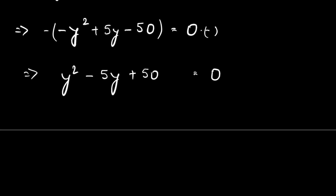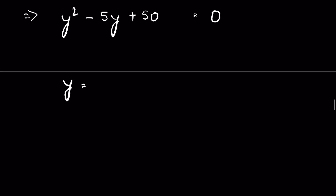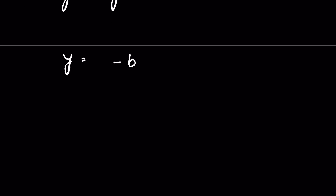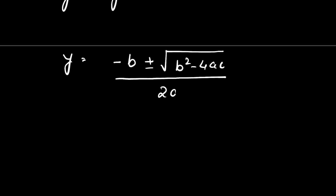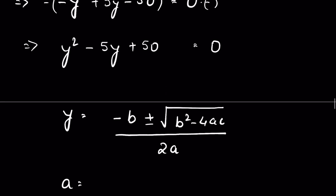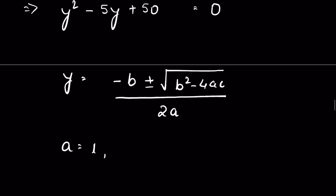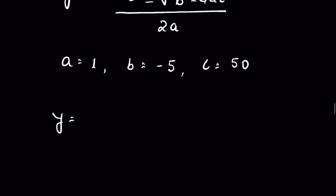We can find the value of y using the quadratic formula, where y equals negative b plus or minus the square root of b squared minus 4ac, all over 2a. Here a is the coefficient of y squared, which is 1; b is the coefficient of y, which is minus 5; and c is 50.